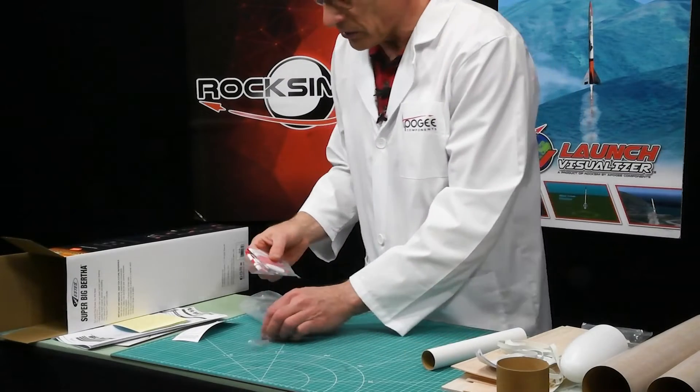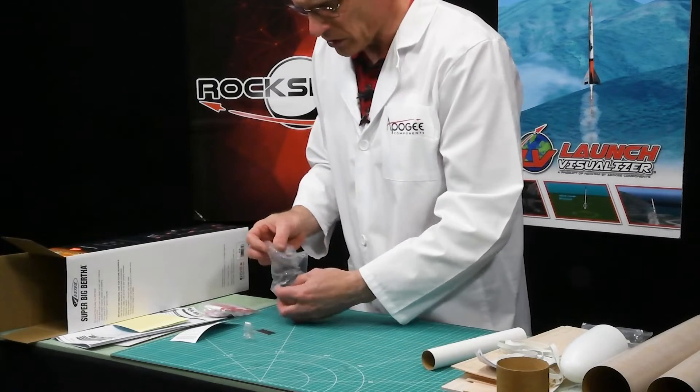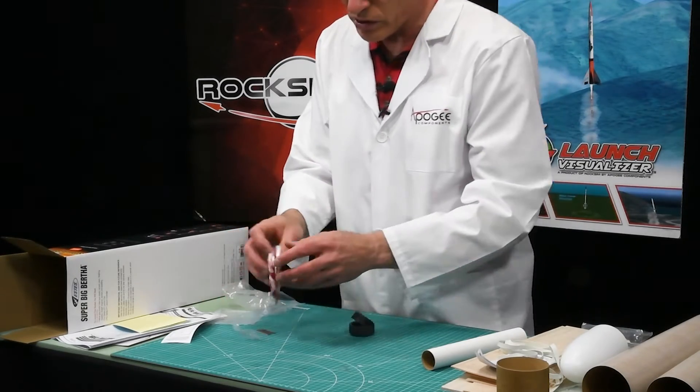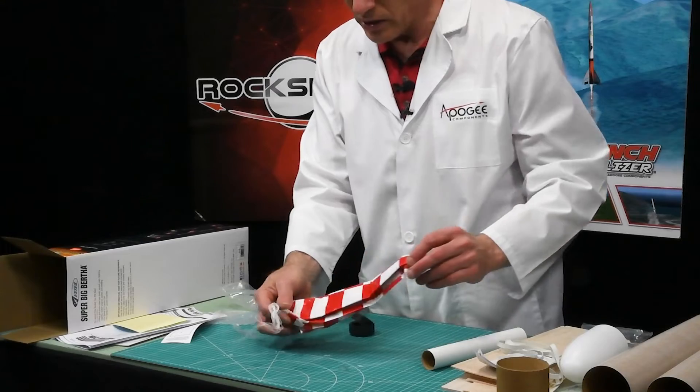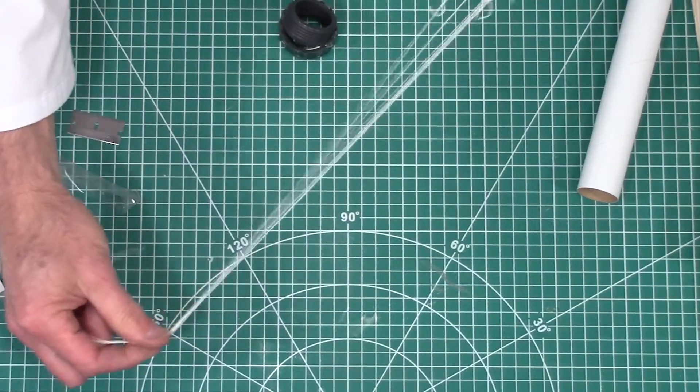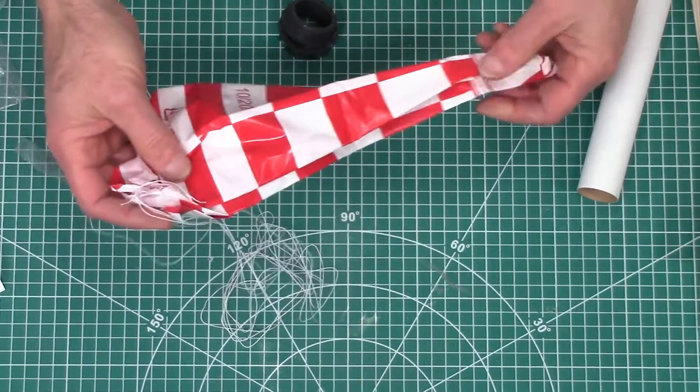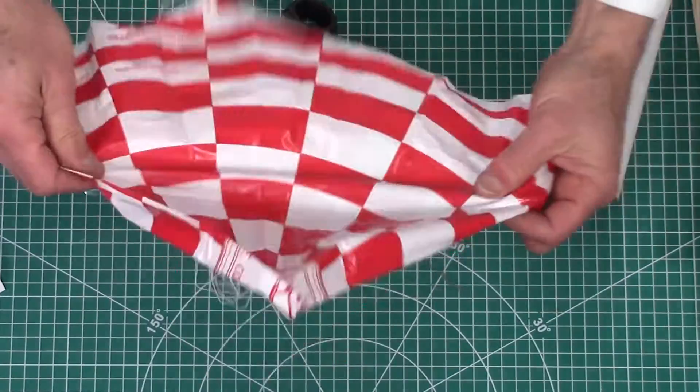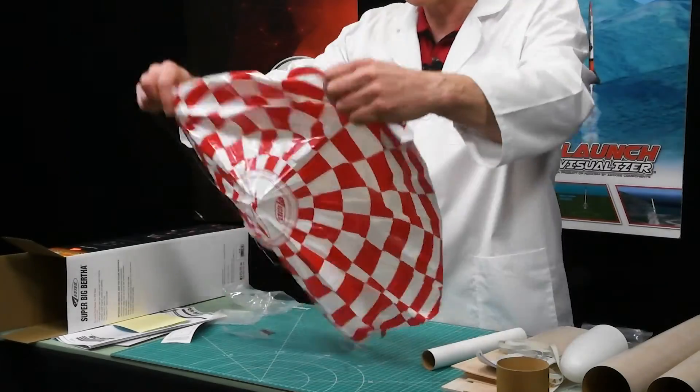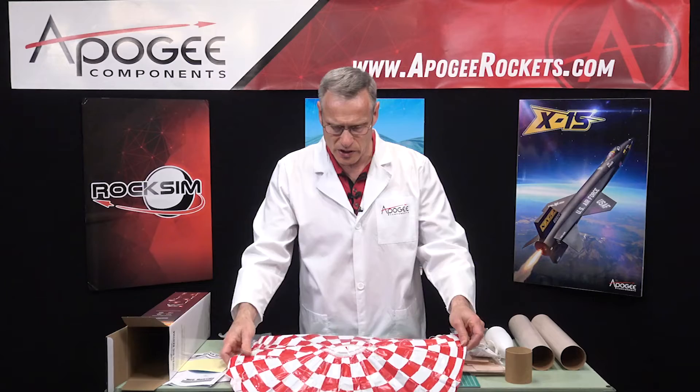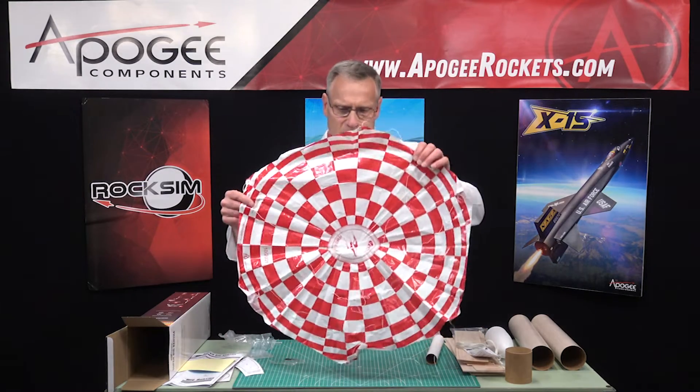And finally, nope, not finally. I got two pieces left. We have our plastic parachute, and I can see that the lines on this parachute are already pre-tied. So, that's nice. So, you don't have to do that yourself. And this kind of looks, I'm guessing, like a 24-inch parachute. Yeah, that's a 24-inch diameter parachute. So, it's nice and bright and big and colorful.